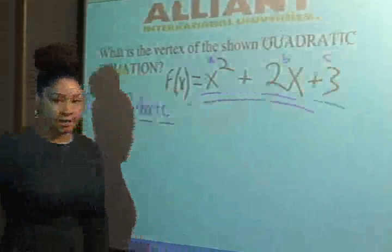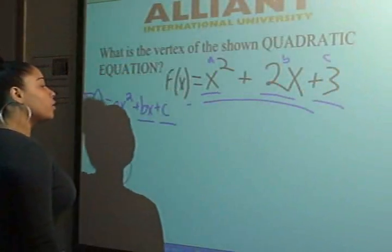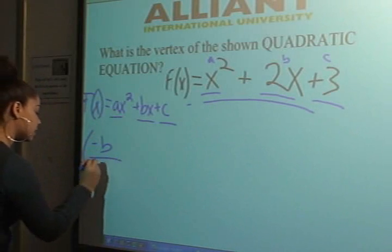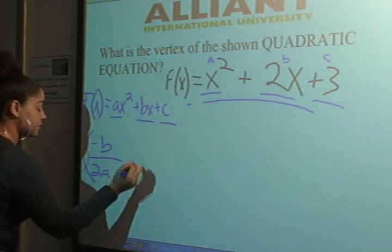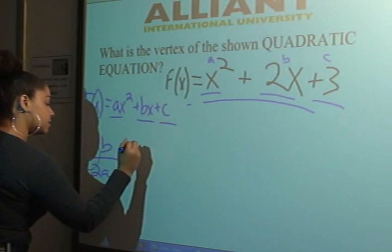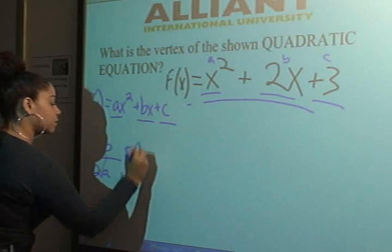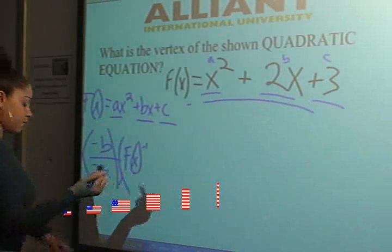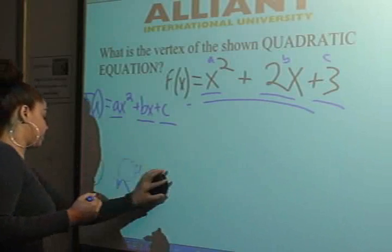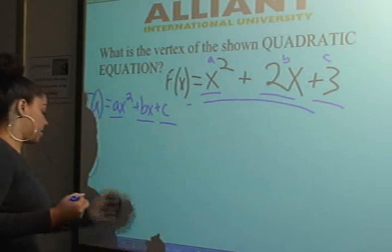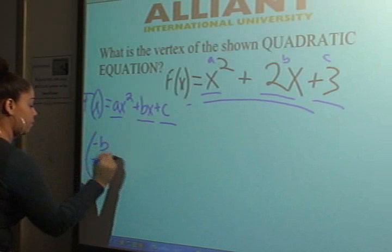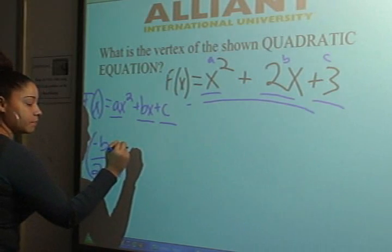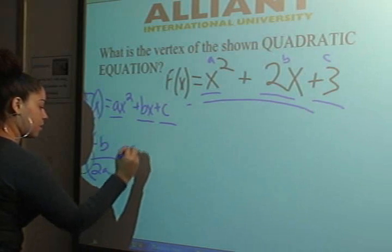You're going to follow the equation to find the vertex. Wait, not inverse function—the formula is negative b over 2a. So it's -b/2a, comma, then the function of negative b over 2a: f(-b/2a).